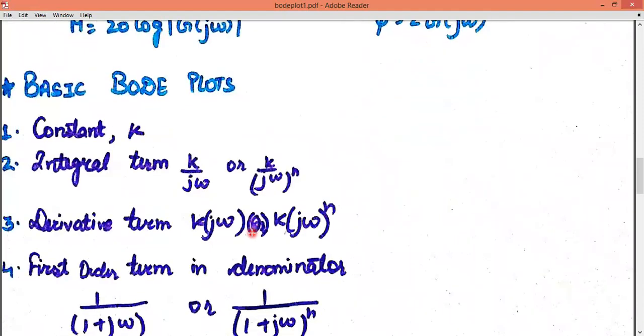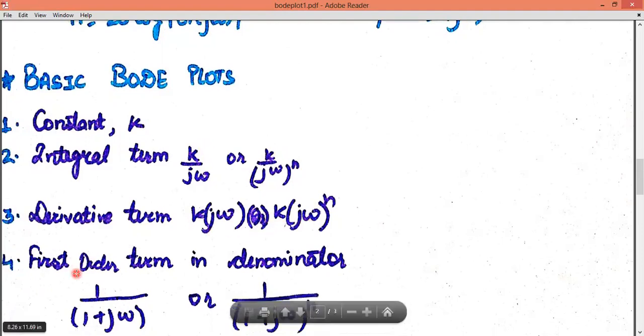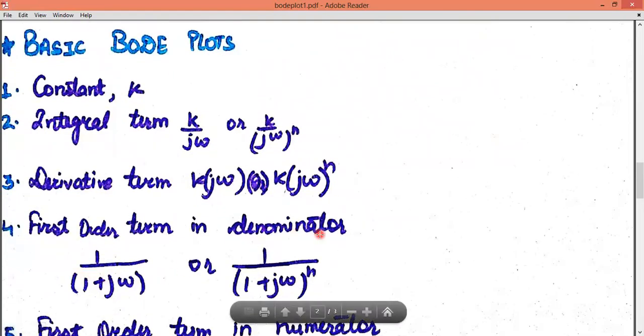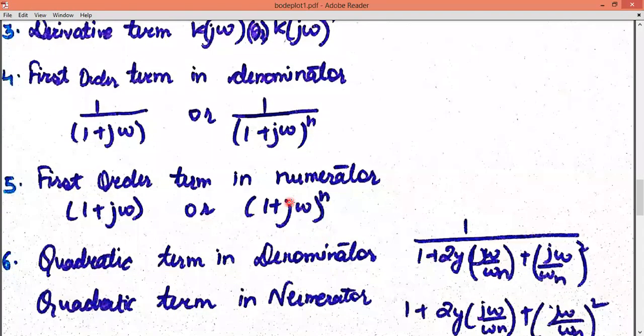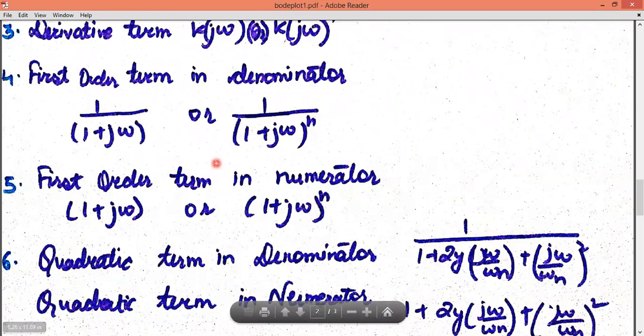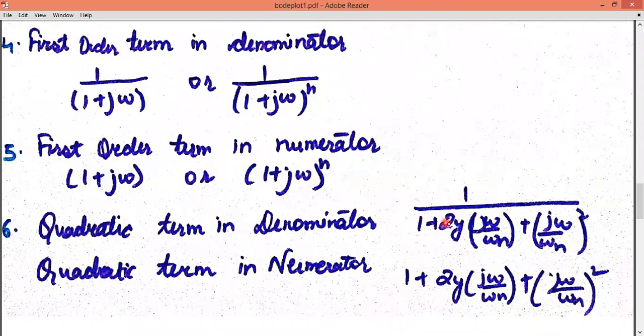Let's see the basic Bode plots. What we have to do now. We always need to take a constant k. We are always given a constant k in the question. In the second part, we need to find the integral term k/(jω) or k/(jω)ⁿ. Third one is derivative term k(jω) or k(jω)ⁿ. First order term in denominator: 1/(1+jωτ) or 1/(1+jωτ)ⁿ. Fifth one is first order term in numerator: (1+jωτ) or (1+jωτ)ⁿ. The sixth one is quadratic term in the denominator.